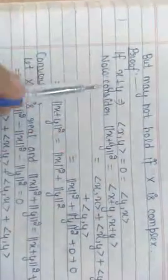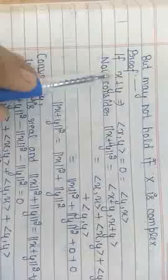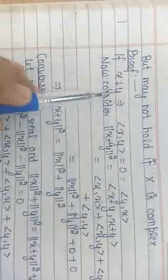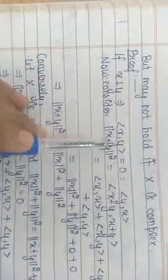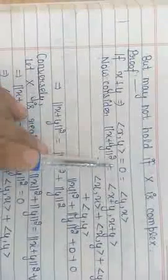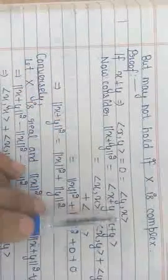To prove Pythagorean Theorem, it is given that x is orthogonal to y. By definition of orthogonality, the inner product of x with y equals 0. Since ⟨x,y⟩ equals 0, its conjugate, the inner product of y with x, is also 0.